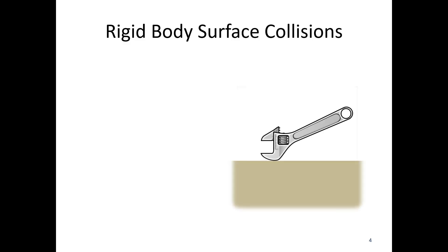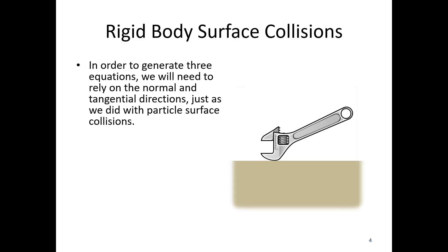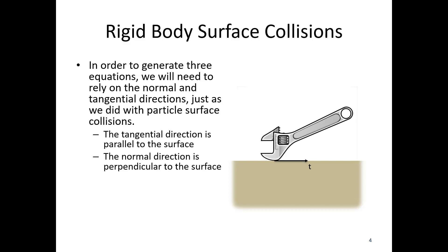Going back to our wrench on a surface, in order to generate the three equations we need to rely on our normal and tangential directions, just as we did with surface particle collision. The tangential direction is parallel to the surface, running along the surface itself. The normal direction is perpendicular to the surface, and this is where the impact forces are going to be acting.